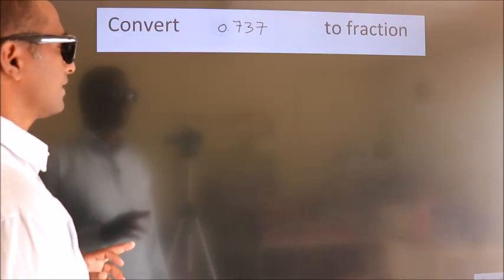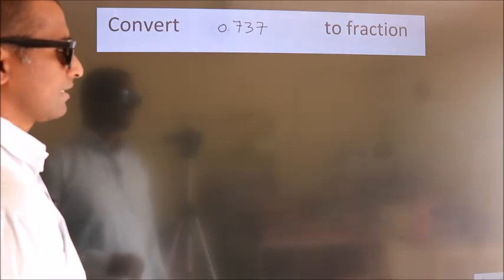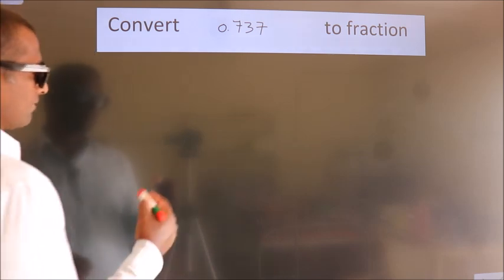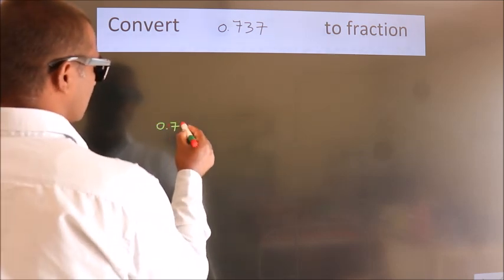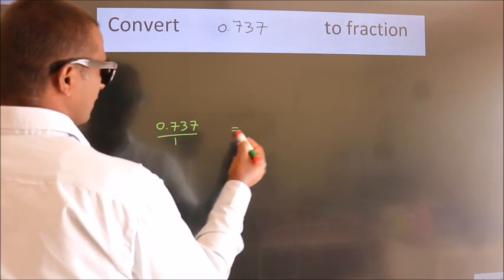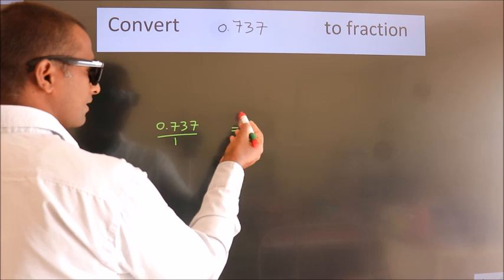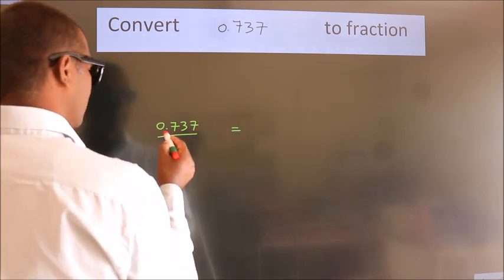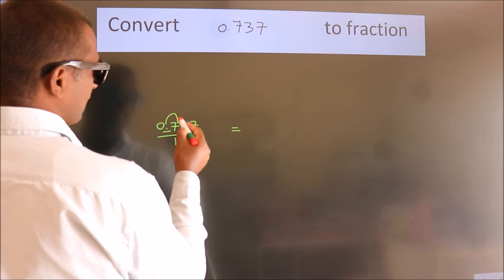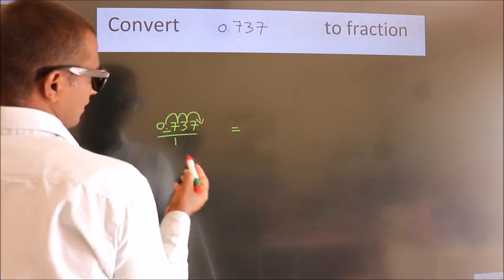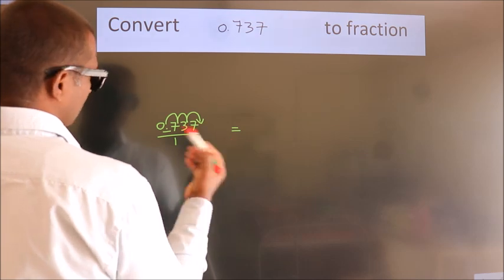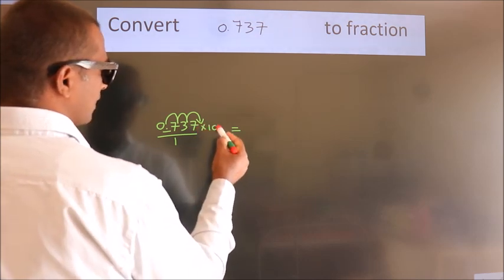Convert 0.737 to a fraction. Given is 0.737. To convert this to a fraction, we have to move this decimal after 1, 2, 3 numbers. To move the decimal after 3 numbers, we have to multiply it with 1000.